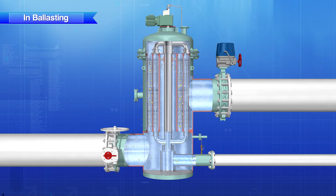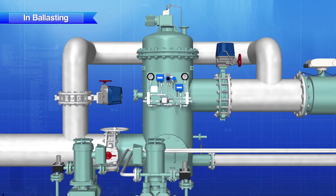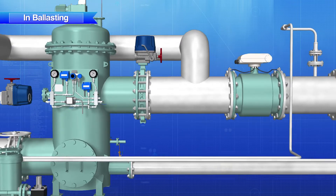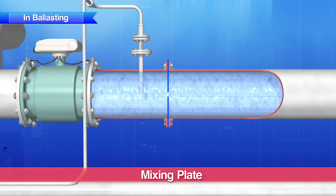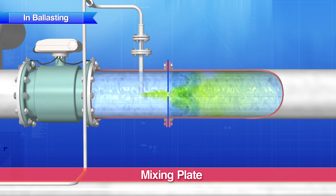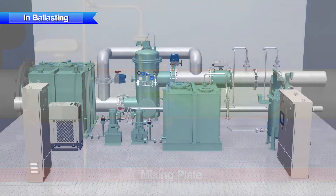The filter elements are automatically backwashed in rotation to prevent clogging. At the same time, other filter elements continue the treatment process. Next, the disinfectant is injected into the ballast water through the injector and the remaining microorganisms and bacteria are sterilized. Once the disinfectant has been injected, the ballast water is stirred by a mixing plate specifically designed by JFE in order to mix the disinfectant homogeneously.